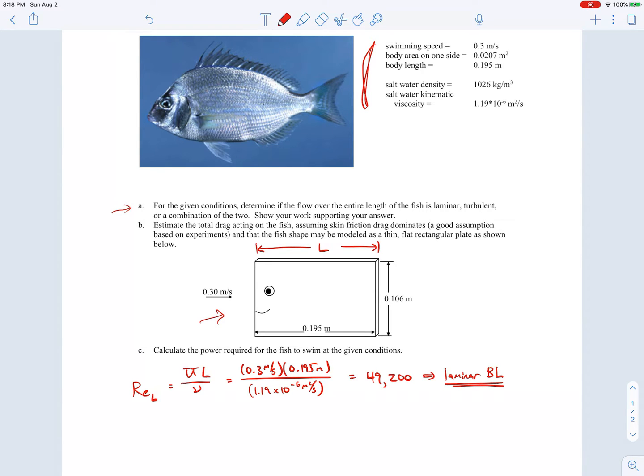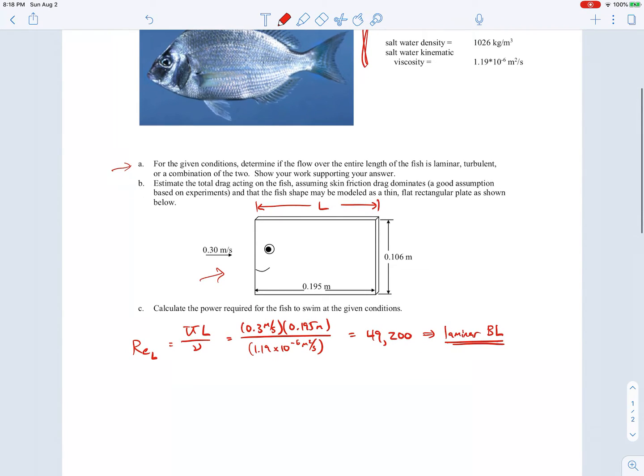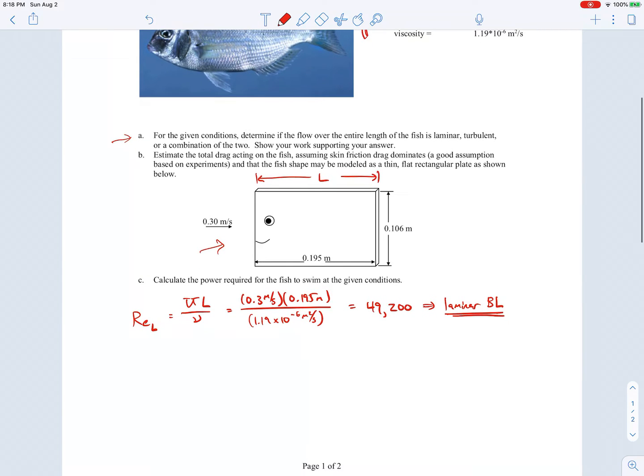Now that brings us to part B, to calculate the total drag acting on the fish. Now that we know that the flow is laminar, we can go ahead and use the drag coefficient for laminar boundary layer flow. We'll use the Blasius solution, which is the laminar boundary layer flow over a flat plate with no pressure gradient on it.